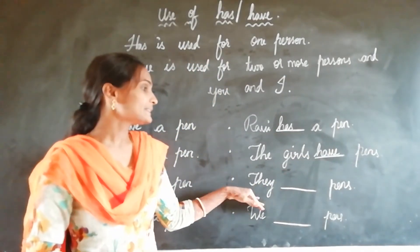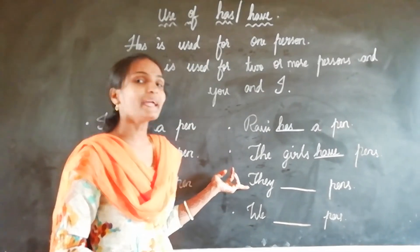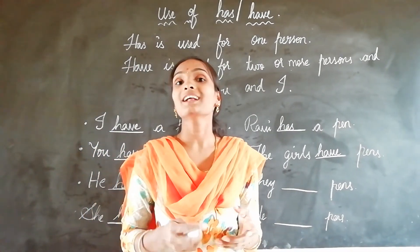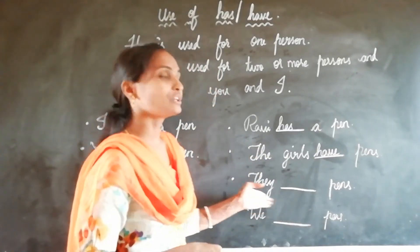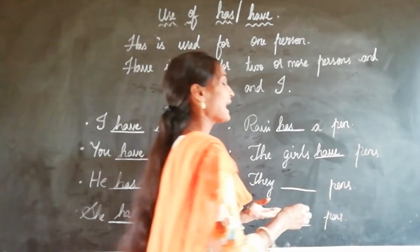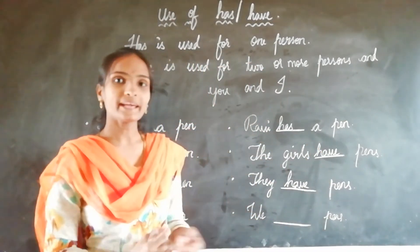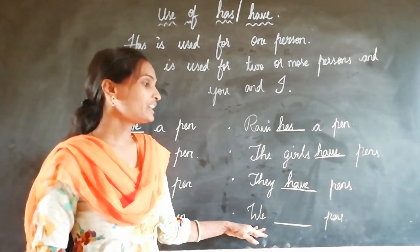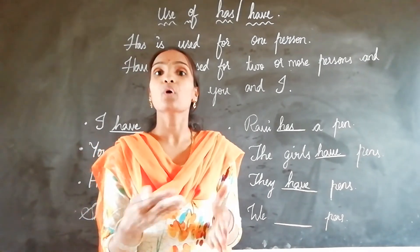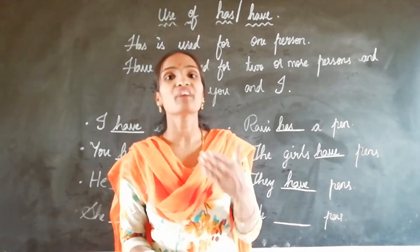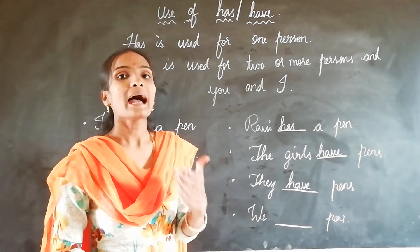Next: 'They dash pens.' Here, 'they' is a pronoun for more persons, so we should use have. Next: 'We dash pens.' Here, 'we' is also a pronoun for more than one person, so we should use have.